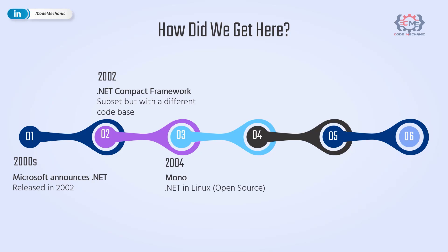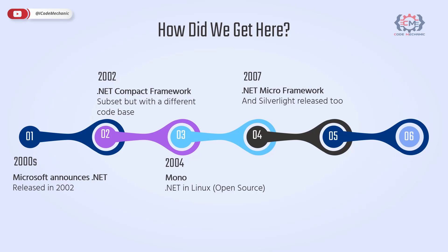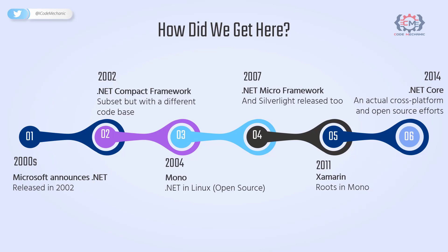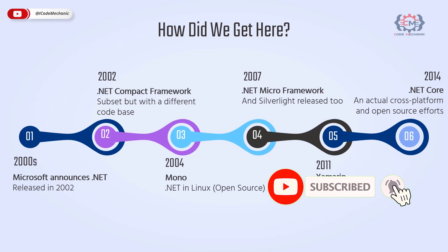2004 saw the release of Mono to run .NET applications on Linux — an open-source effort not created by Microsoft. In 2007, the .NET Micro Framework was released, designed for resource-constrained devices. Silverlight was also released that year, providing a framework for rich internet applications. Then Xamarin in 2011, with its roots in Mono, for building Android and iOS apps with .NET and C#. Xamarin was later acquired by Microsoft. Then in 2014, Microsoft started creating an actual cross-platform development framework, released in 2016 as .NET Core.